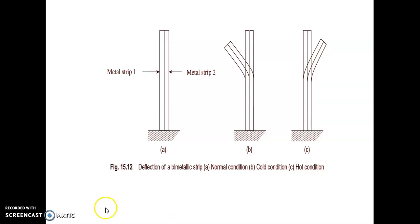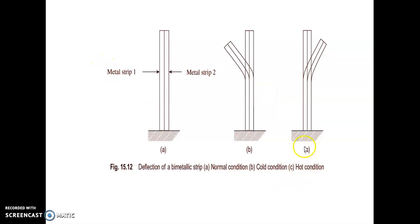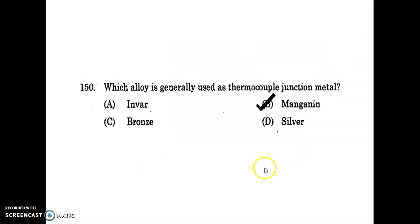A bimetallic strip under normal conditions remains straight; when exposed to heat it bends in one direction, and when exposed to cold it bends in the other direction. The alloy generally used as thermocouple junction metal is Manganin. Option is B.